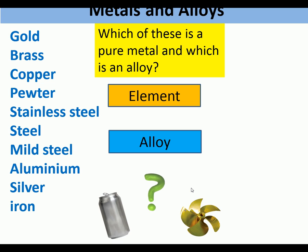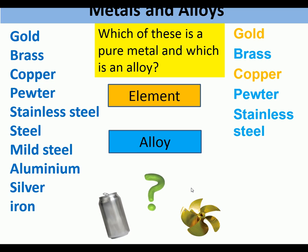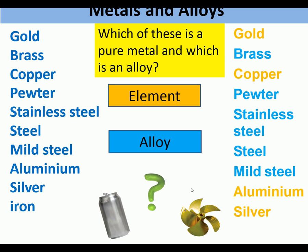Which of these is a pure metal and which is an alloy? Gold — pure metal. Brass — alloy. Copper — pure metal. Pewter — alloy. Stainless steel — alloy. Mild steel — alloy. Aluminium — pure metal. Silver — pure metal. Iron — pure metal.